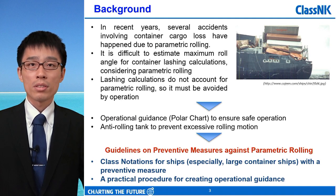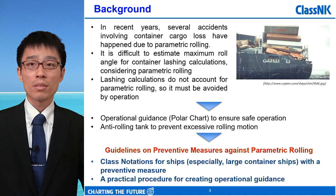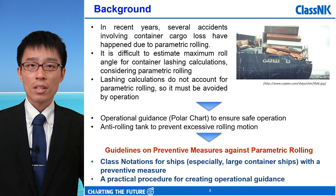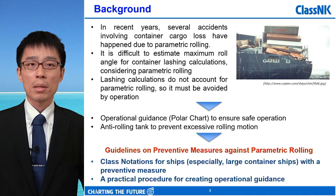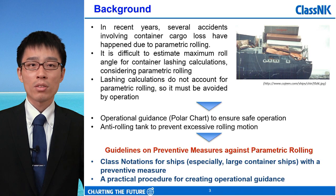In recent years, several accidents involving container cargo loss have happened due to parametric rolling. Parametric rolling occurs in head sea or following sea. Excessive rolling motion could result in the failure of the container securing system, but it is difficult to estimate maximum roll angle for container lashing calculations considering parametric rolling. Lashing calculations do not account for parametric rolling, so it must be avoided by appropriate operation.